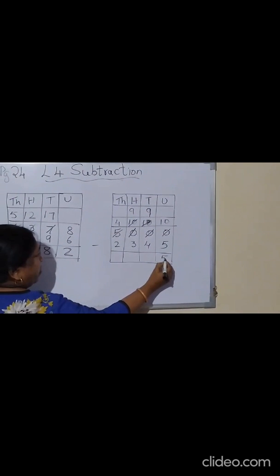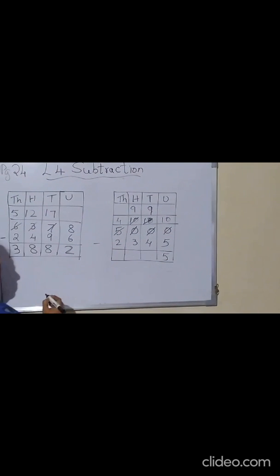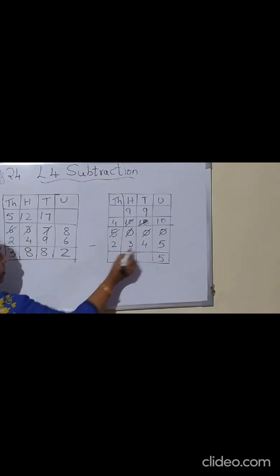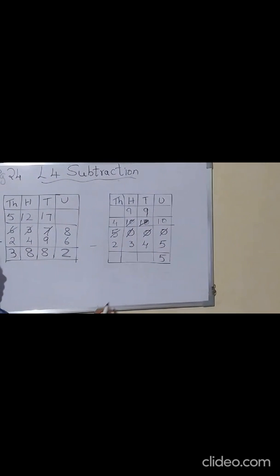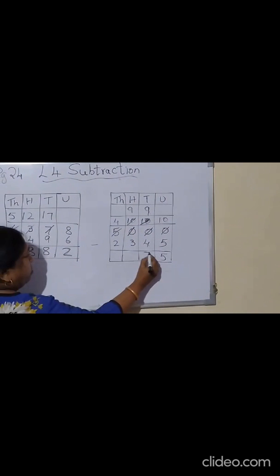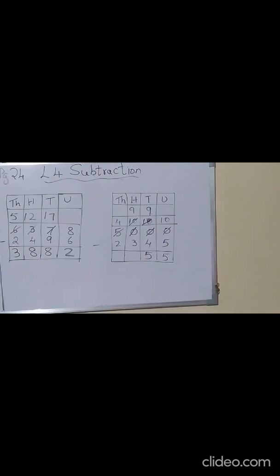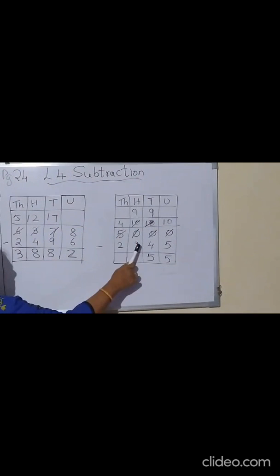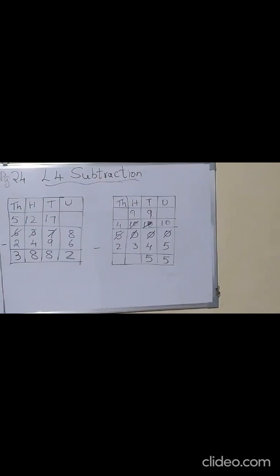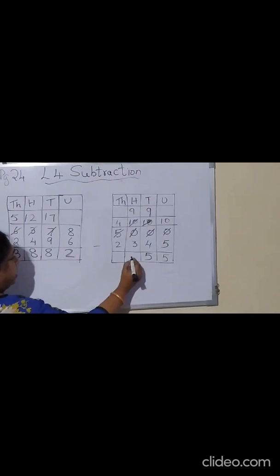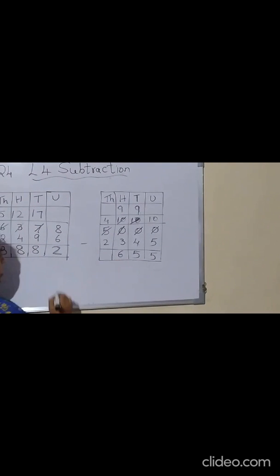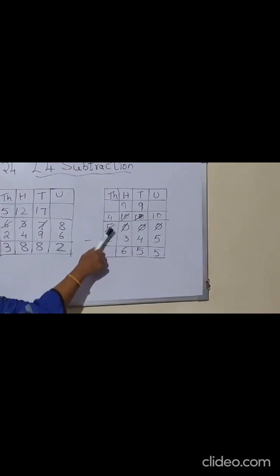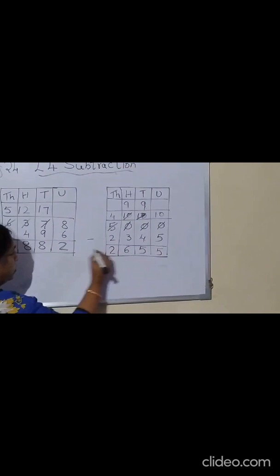And now you do 10 minus 5 — so 10 minus 5 is 5. And now here we will do 9 minus 4 — that is also 5. And now here 9 minus 3 — 9 minus 3 means how much? 6. And here it will be 4 minus 2 — that is 2.